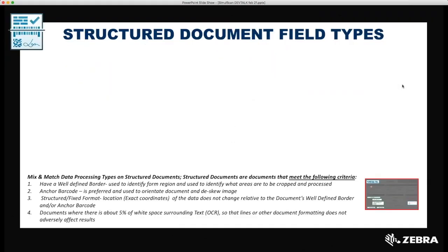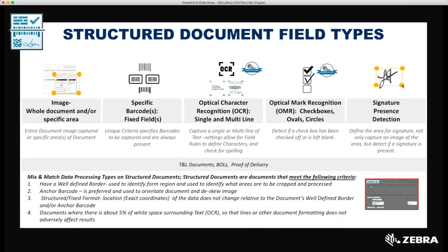Next is structured document field types. It's important to understand what a structured document is — documents that follow a template design where the data, such as a mailing address, may change, but its location does not change and is always located in the same position relative to the document's border or anchor barcode. With this, we support OCR, OMR — that's printed text, checkboxes, oval circles — barcodes, images, as well as detecting the presence of a signature.